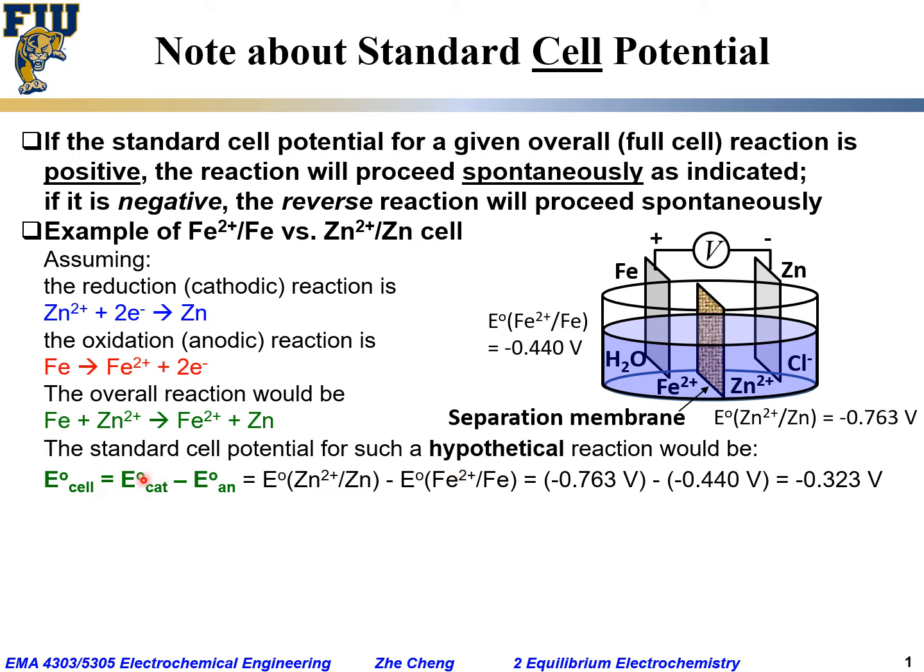The standard cell potential would be E°cathode minus E°anode. Keep in mind, the cathodic reaction in this case is for the zinc, which is minus 0.763 volt.